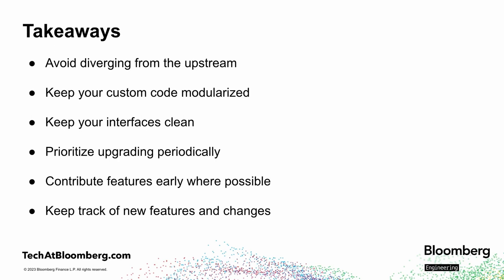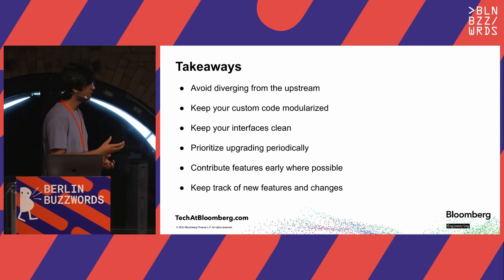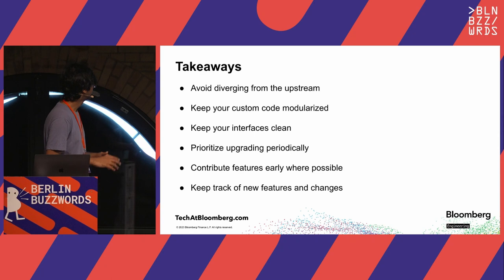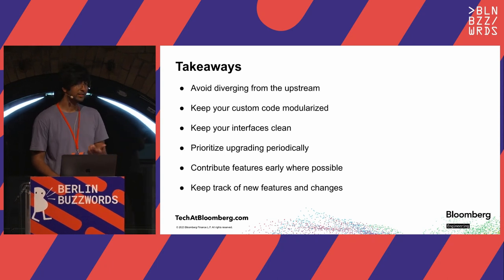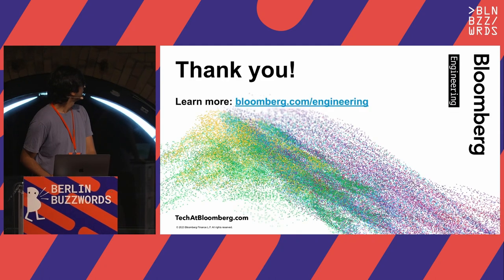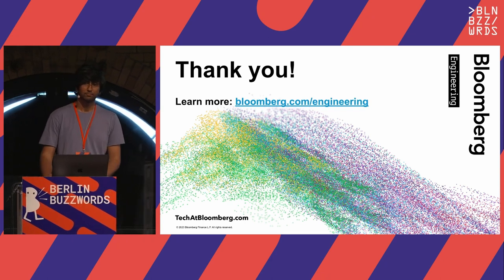Finally, there are a few takeaways when I look back. It goes without saying, we should avoid diverging from the upstream as much as possible, but there might be certain situations where you cannot do that. Always make sure that your custom code is modularized and its interfaces with the system are clean, so that when the time comes, you can easily move it out and make it a plugin. Also, obviously, prioritize upgrading periodically, because the longer you wait, the more difficult it gets. And just keep track of new things that happen in the community so that you clearly understand when is the right time to do an upgrade. That's all — thank you, everyone. If you would like to learn more about Bloomberg, you can check out bloomberg.com/engineering or even talk to me.